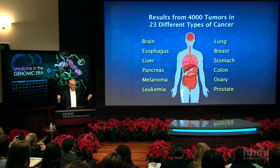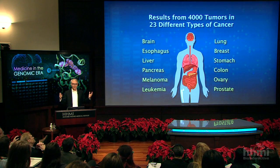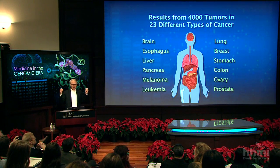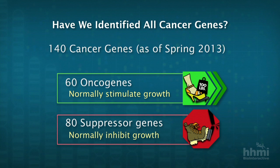I want to pause for a minute and get you to think about what are the possible questions that can be asked and answered once you have this avalanche of data. One of the first ones that comes to mind is: in each individual patient's tumor, how many mutations actually are there? As of a data analysis from earlier this year, the number of cancer genes is 140.